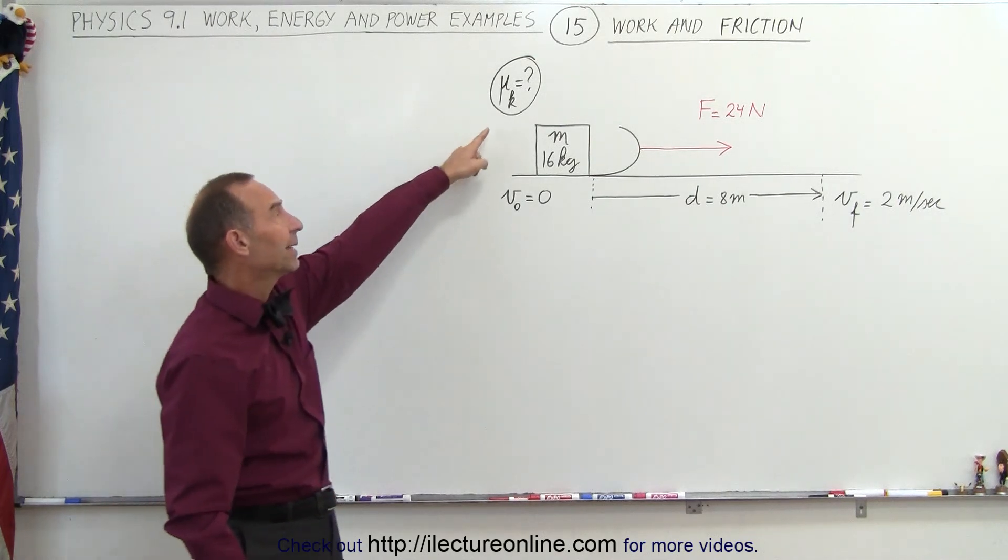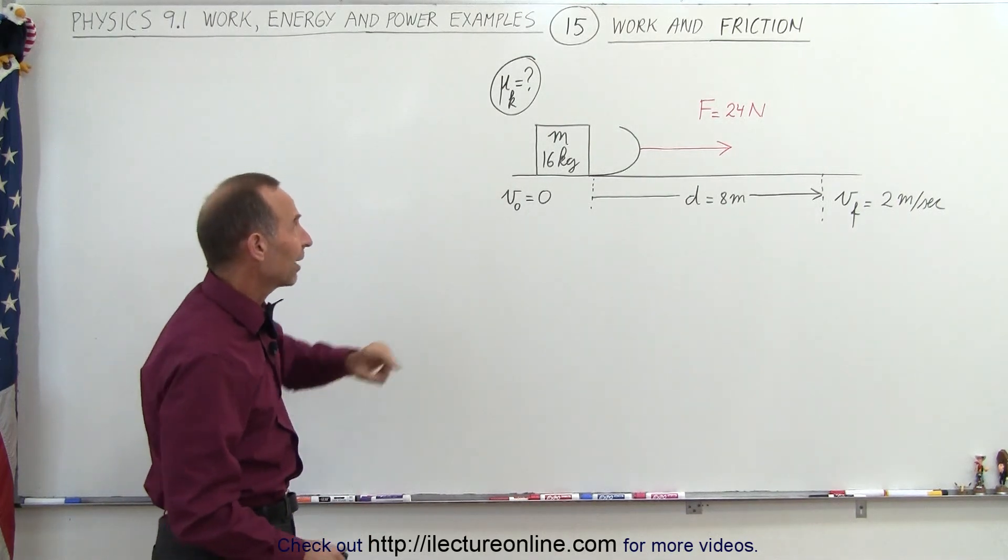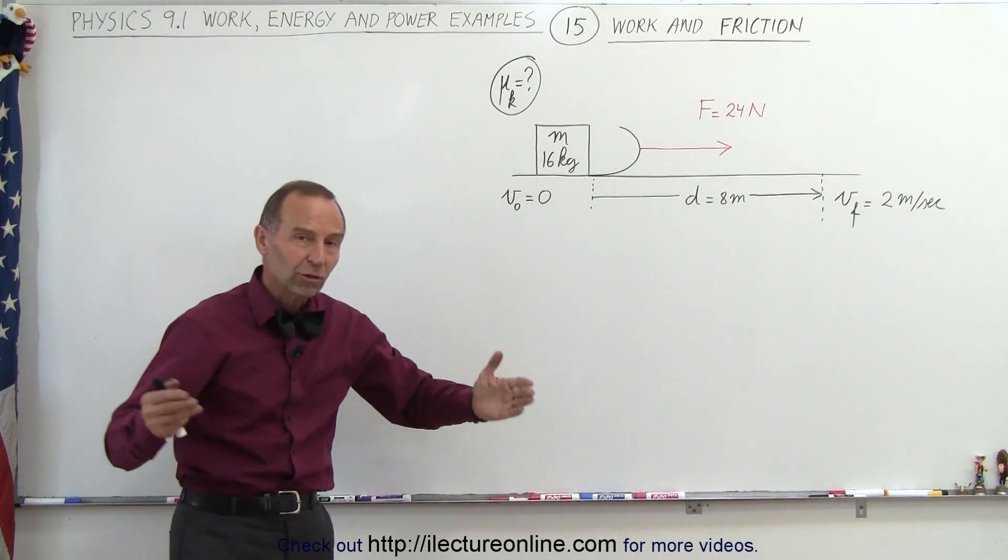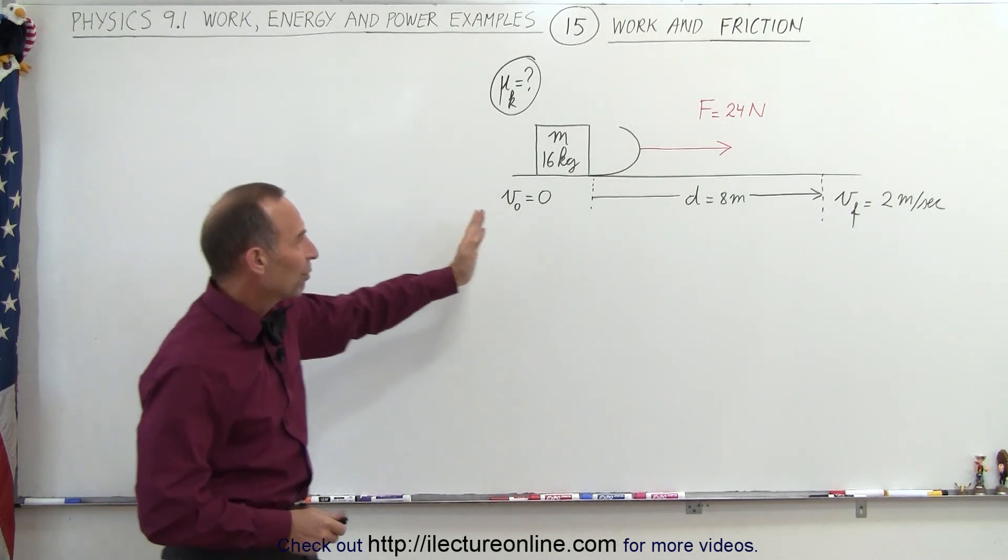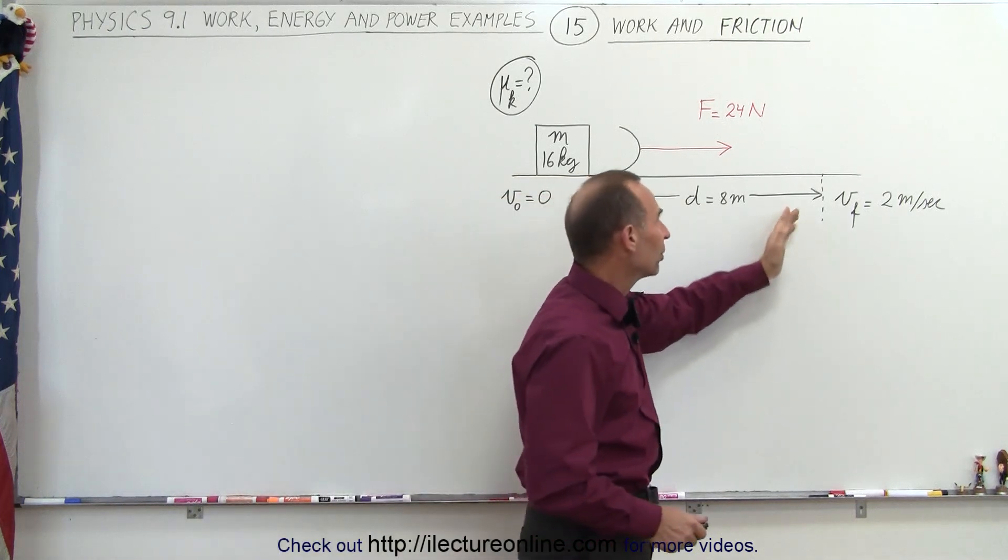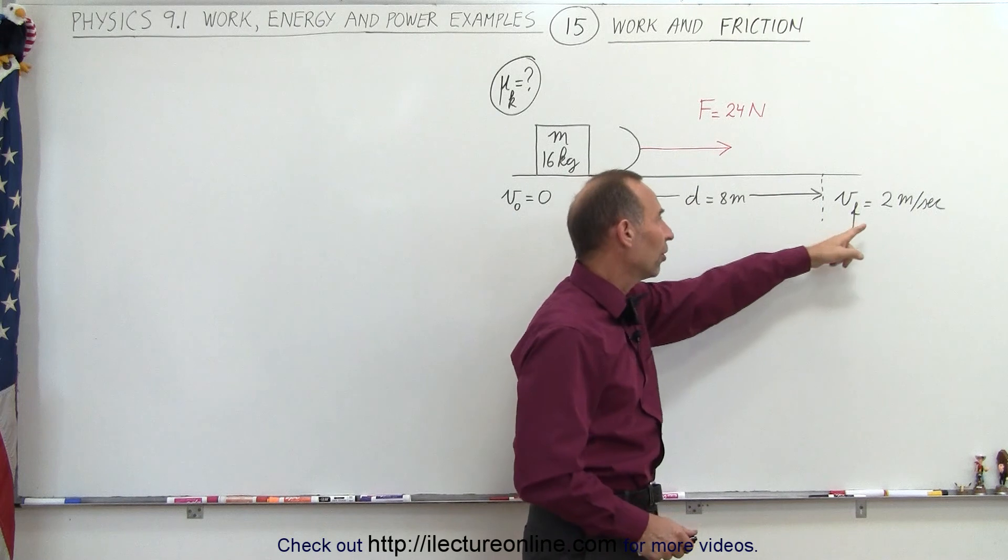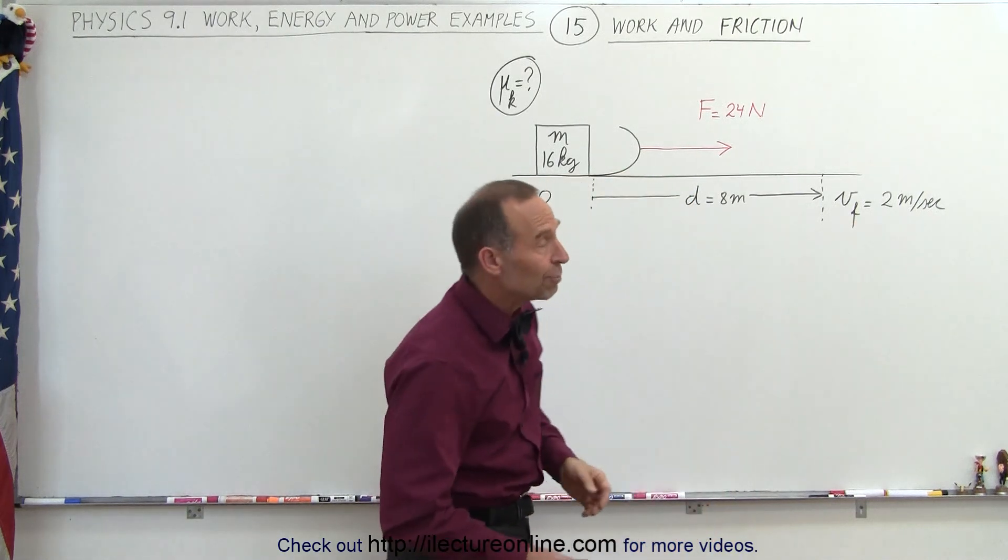The force applied is 24 newtons. We're not given the kinetic coefficient of friction. Matter of fact, that's what we're asking for. We start with the sled at rest, velocity equals zero initially, and after we've pulled the sled 8 meters with a constant force of 24 newtons, the sled has reached the speed of 2 meters per second.